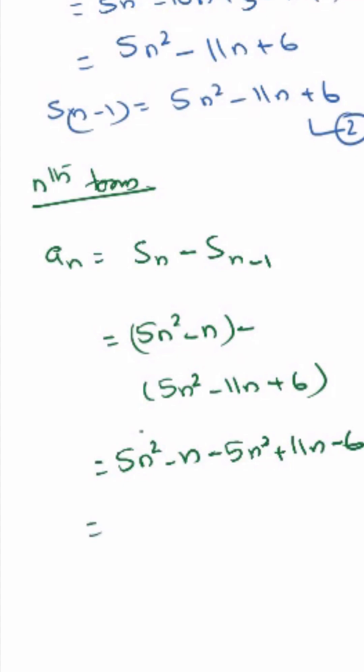That's equal to this. The 5n square terms cancel. So we will get 10n minus 6.